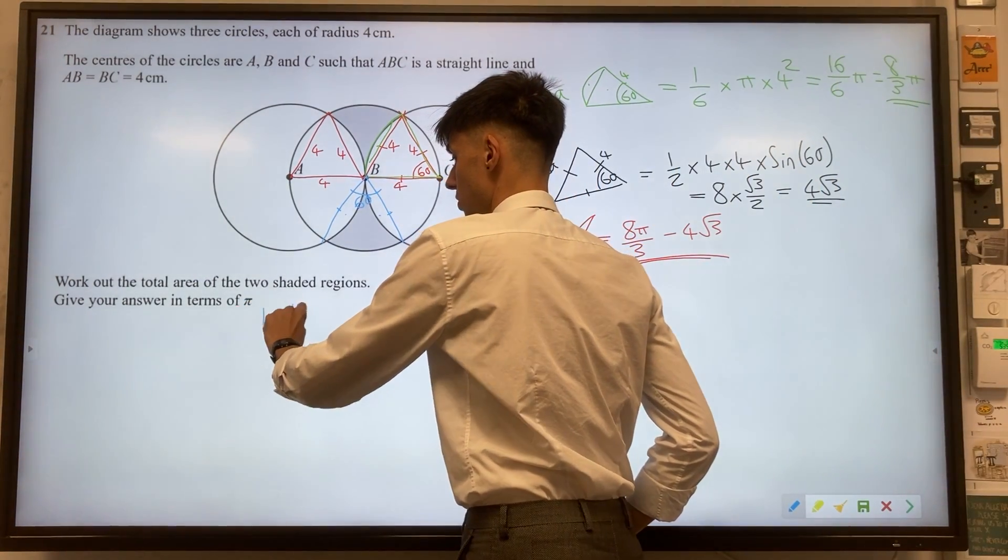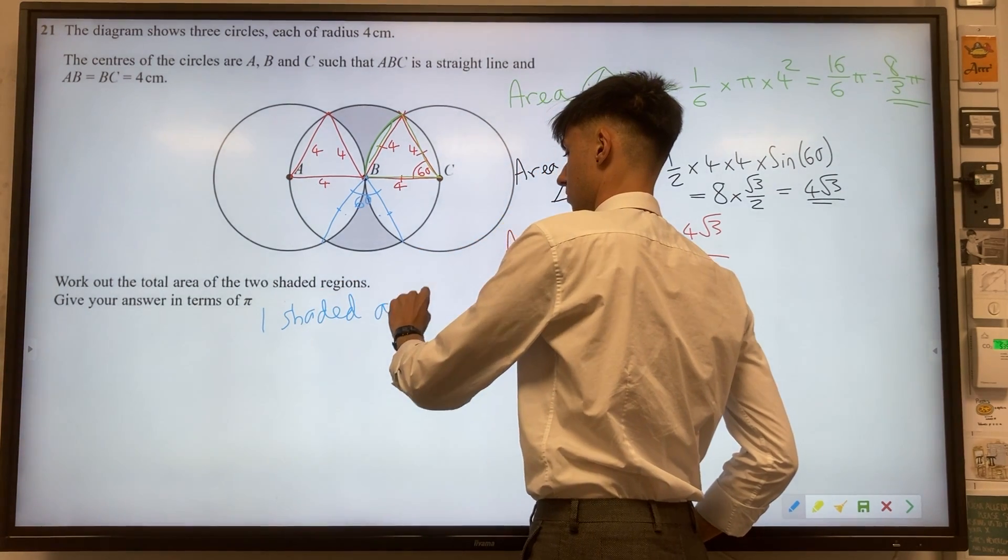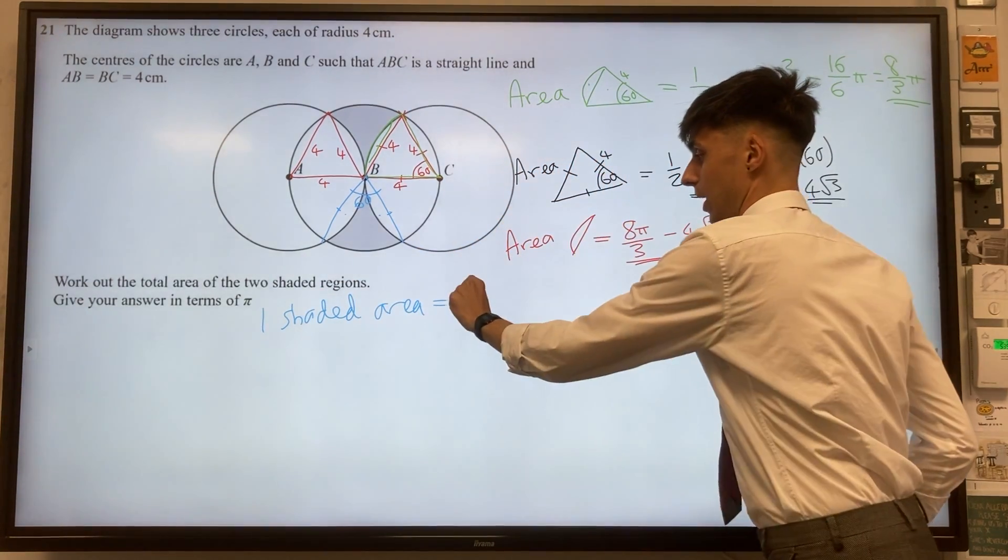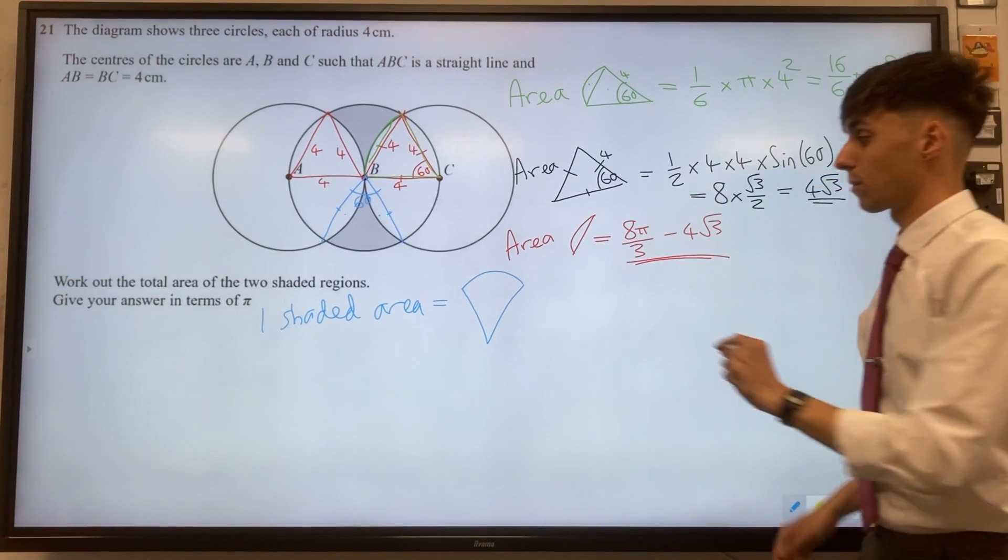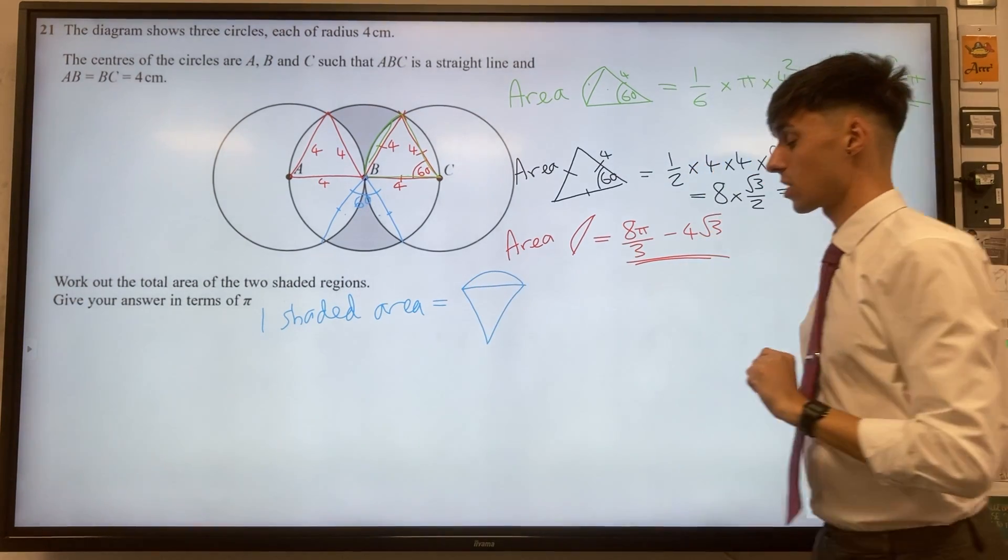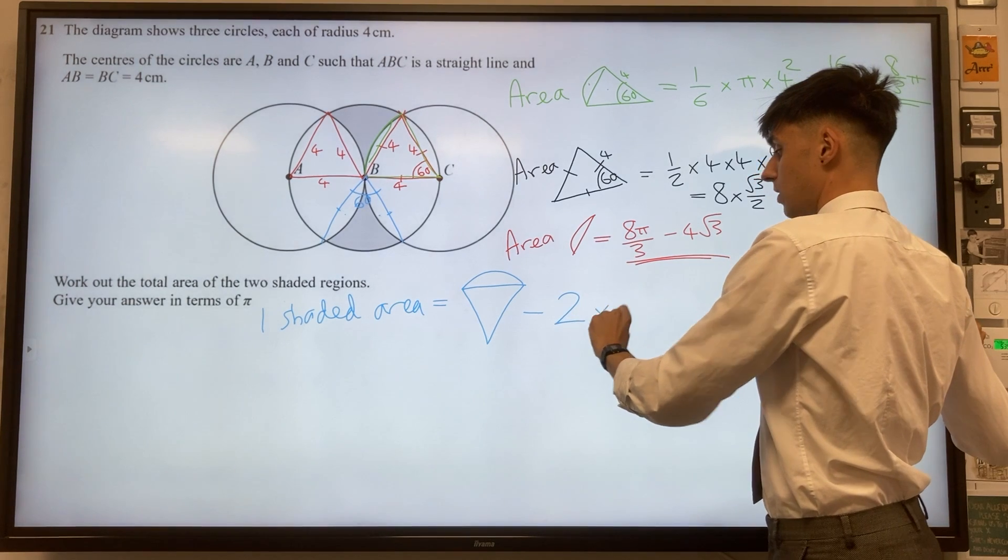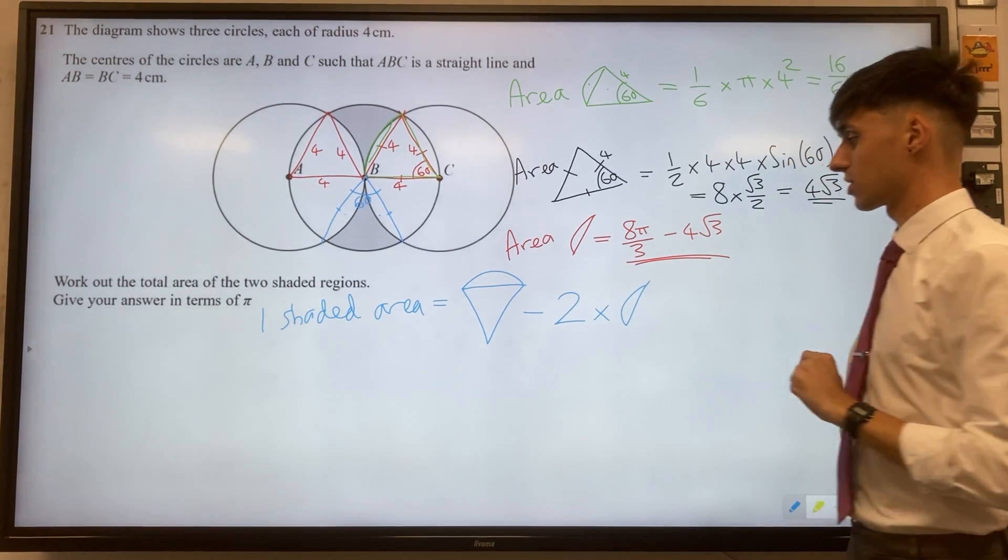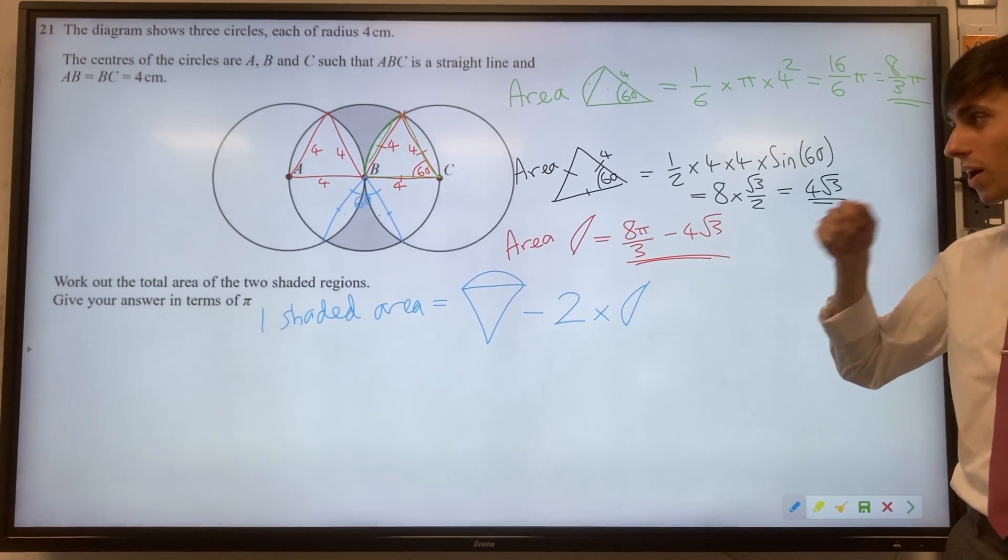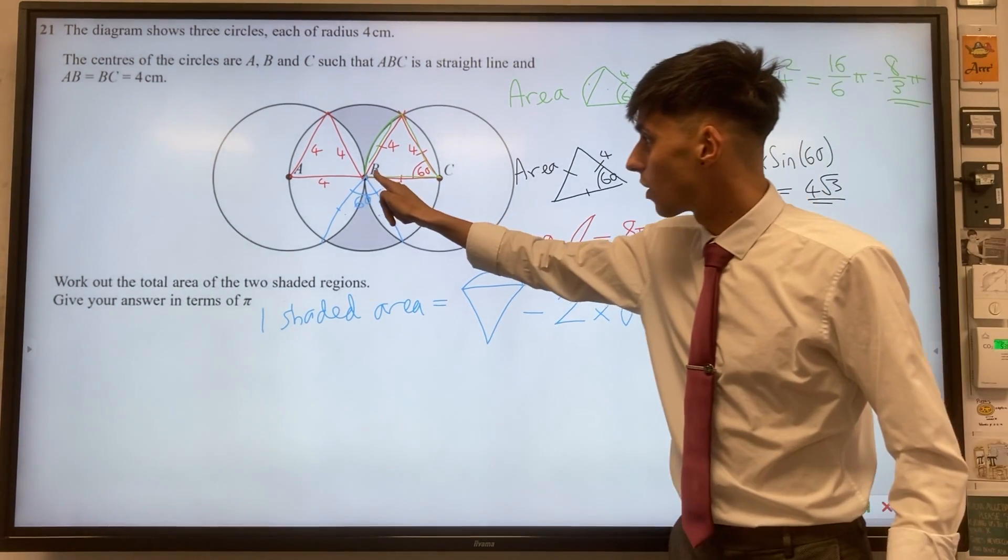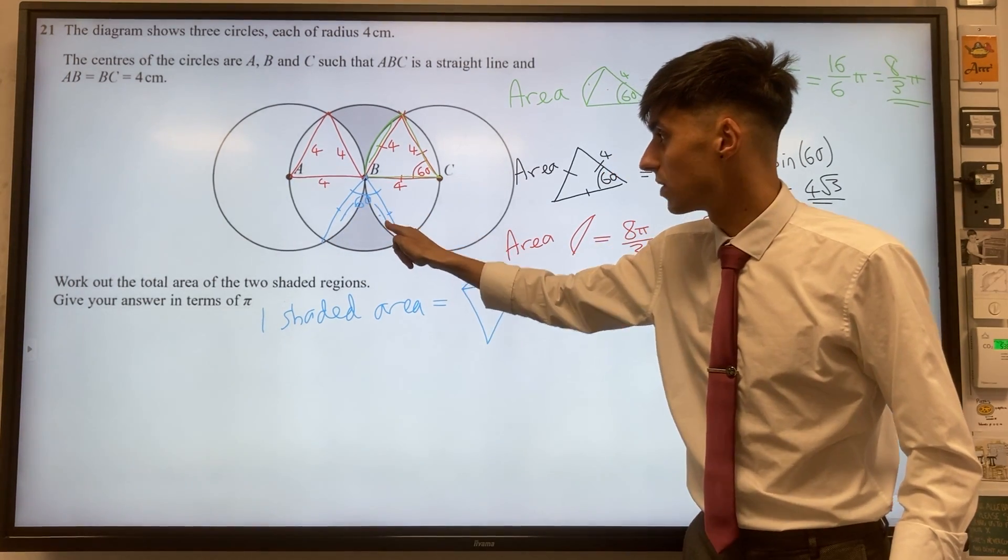One shaded area equals one of our whole sectors take away two pizza crust segments. If you want to check why, you can see the whole sector here, take away this pizza crust, take away this pizza crust.